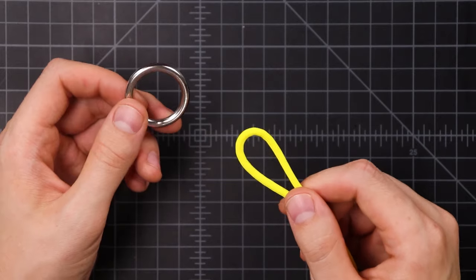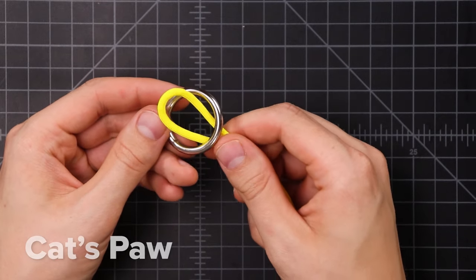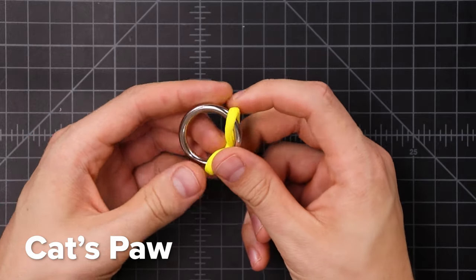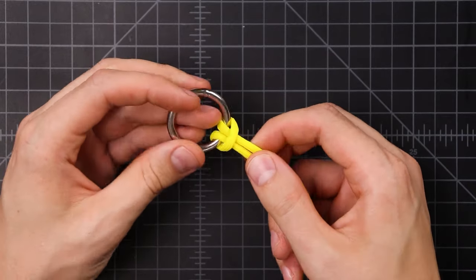Let's start with the cat's paw. We'll begin by making a cow hitch. So insert a loop or bight of the rope through the ring, and then bring it around like this, and there is our cow hitch.